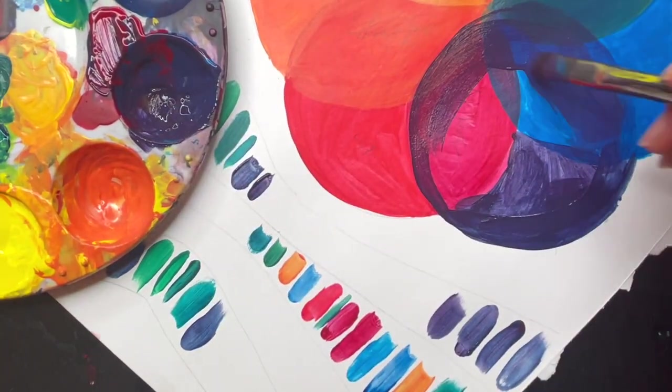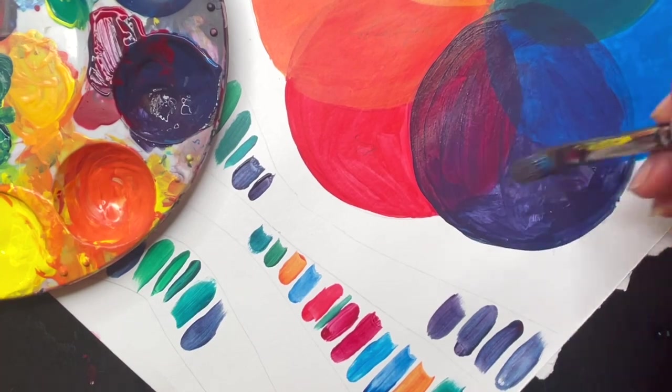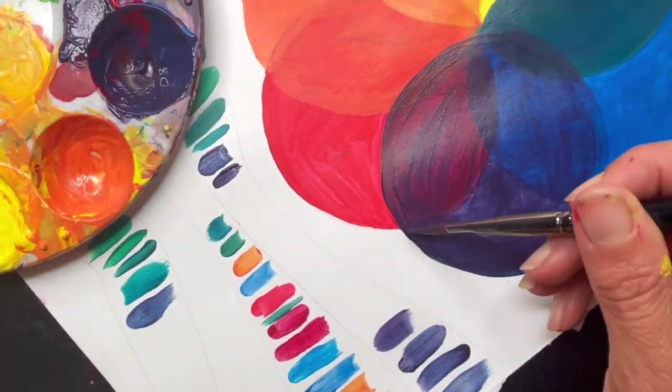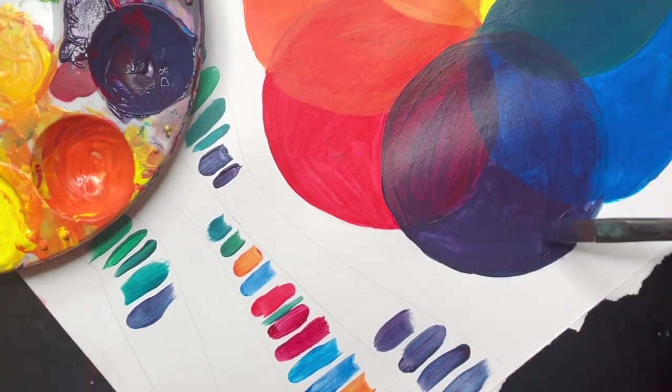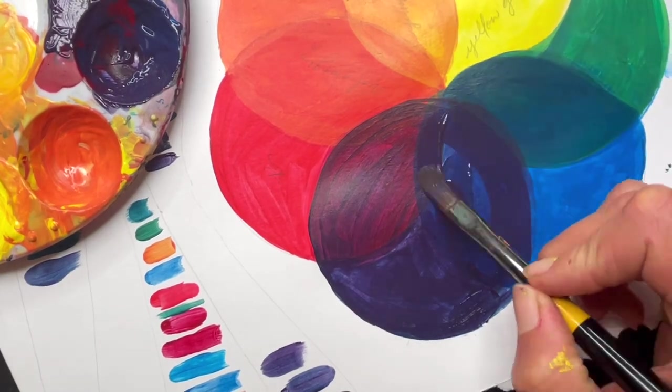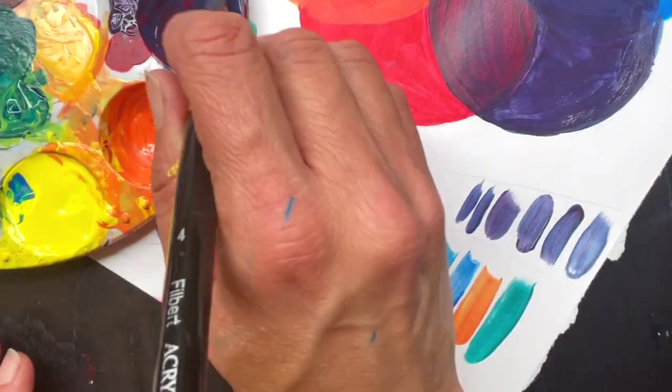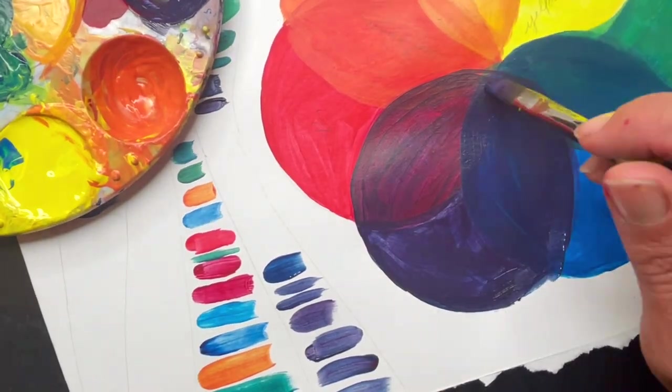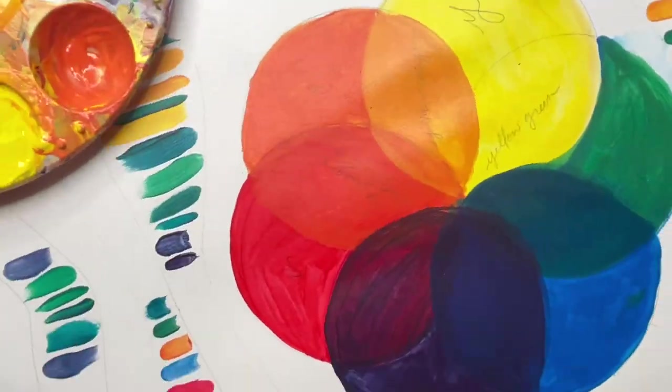I'm going to start creating my tertiaries by going ahead and taking the color that I've already created, and I'm going to layer them right over the red and the blue to start creating red-violet and blue-violet. From there, I can take the violet that I already created and add a little blue and a little red to create the subtle delineations in color that make them tertiary colors.